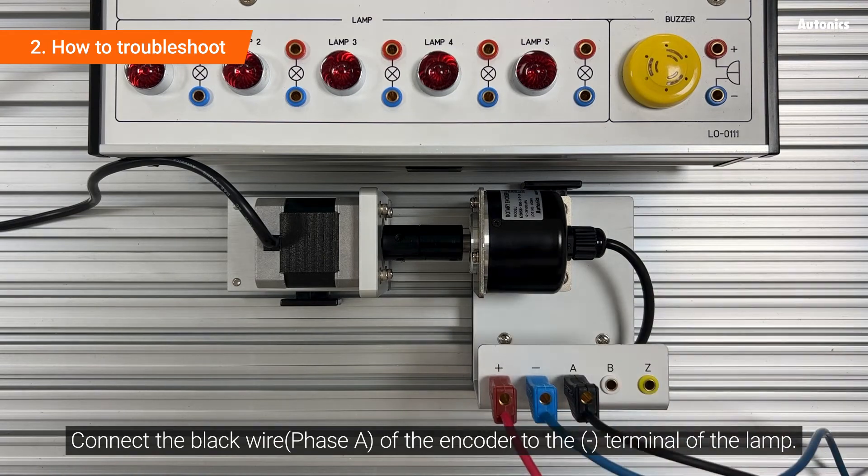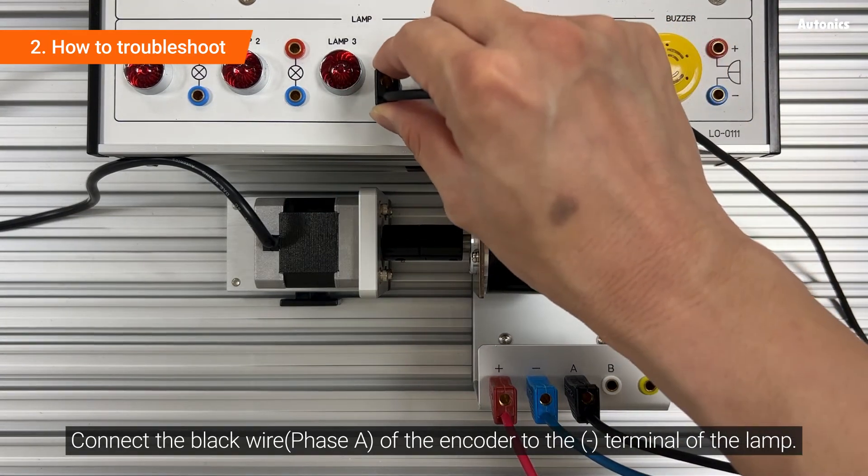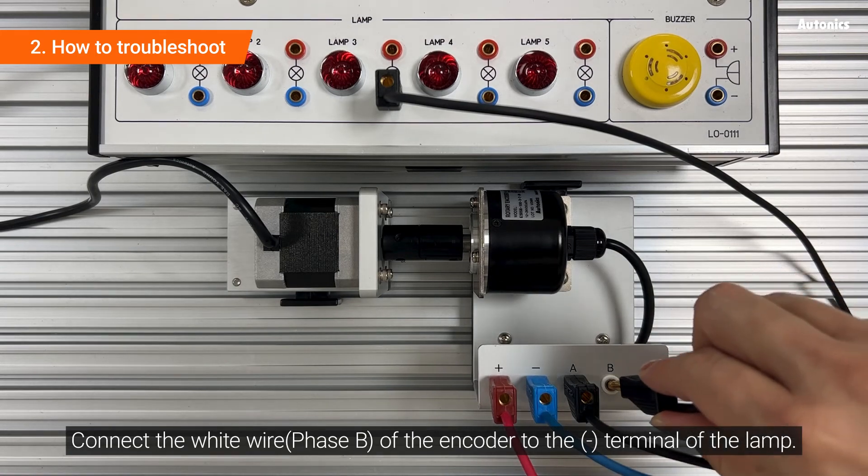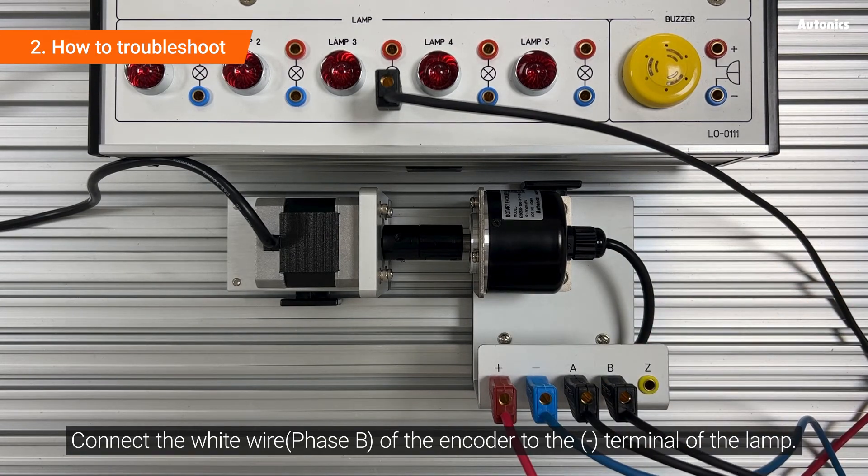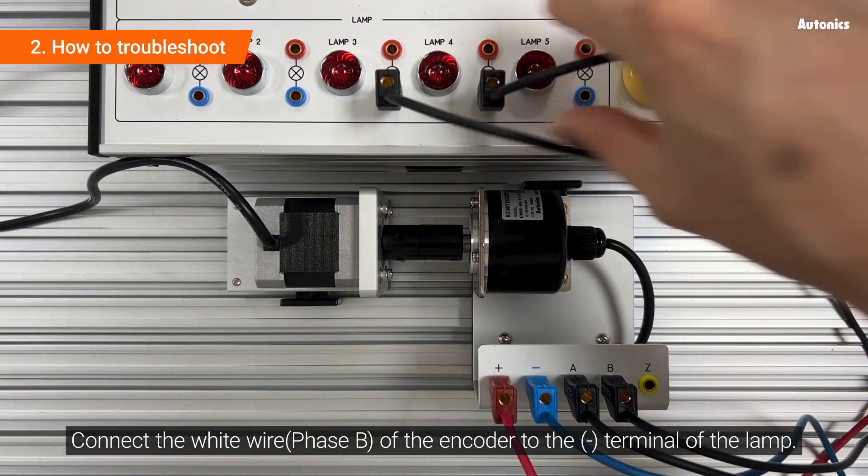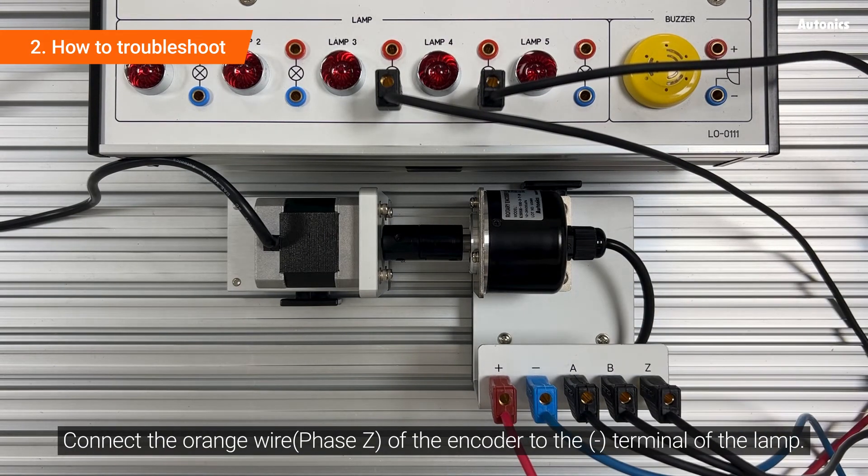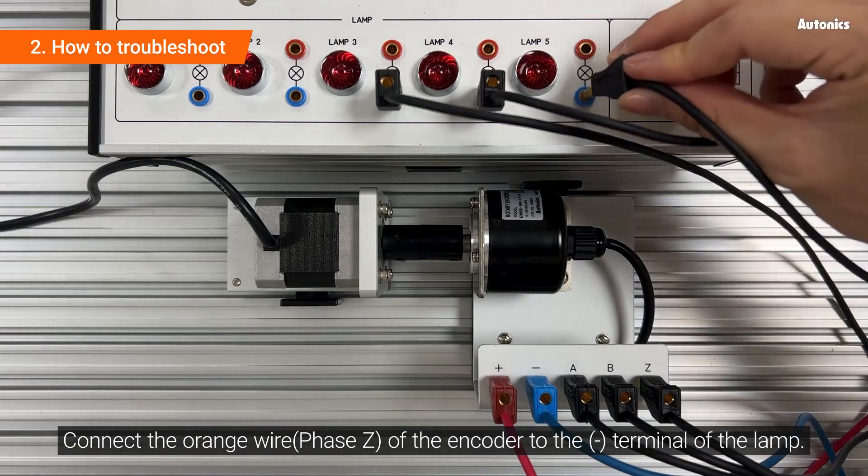Connect the black wire of the encoder to the minus terminal of the lamp. Connect the white wire and the orange wire of the encoder to the minus terminal of the lamp.